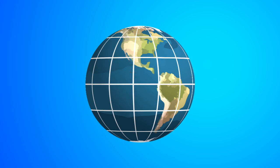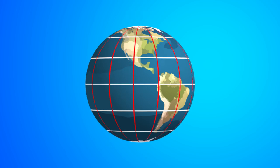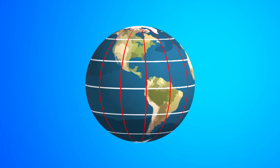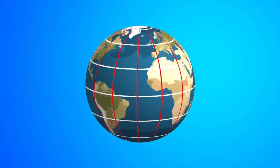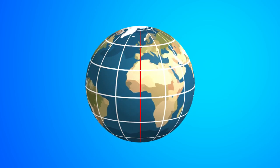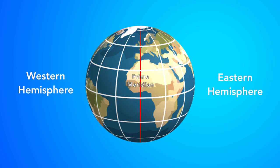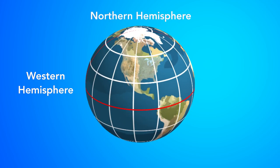Now, on to longitude. Lines of longitude connect the poles. Like latitude, longitude is specified in degrees. Just as the equator is the origin for the latitude numbering system, we have an origin for the lines of longitude. This is the zero-degree longitude and it runs north-south through Greenwich, England. This is called the prime meridian and splits the Earth into the eastern and western hemispheres. That puts the continental United States in the northern hemisphere as well as in the western hemisphere.